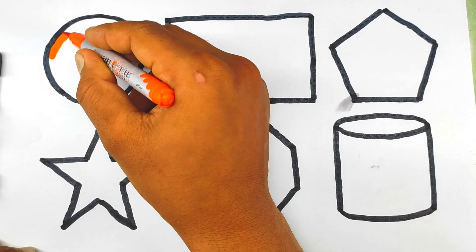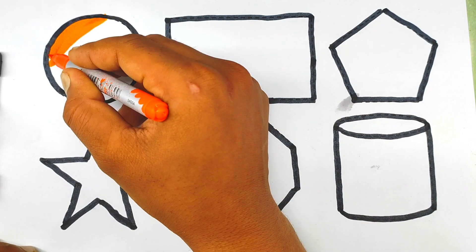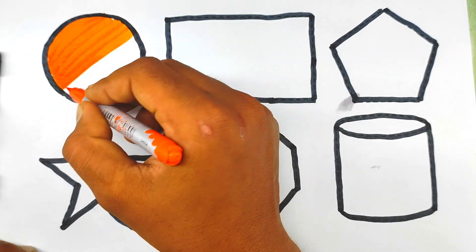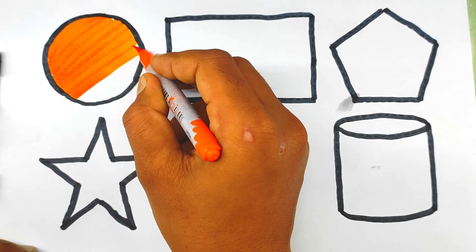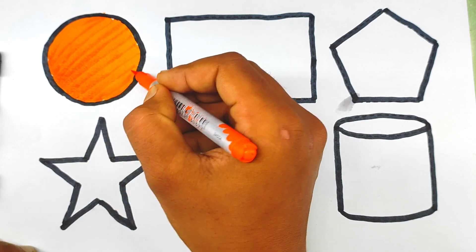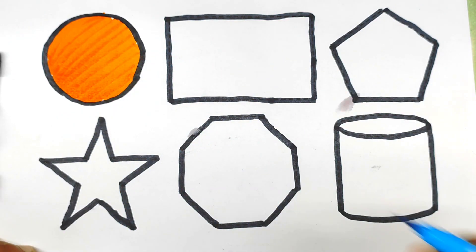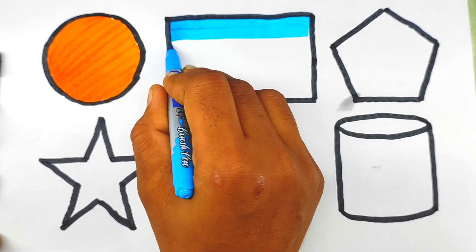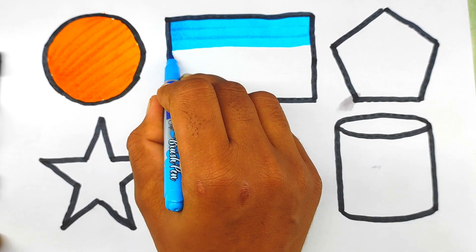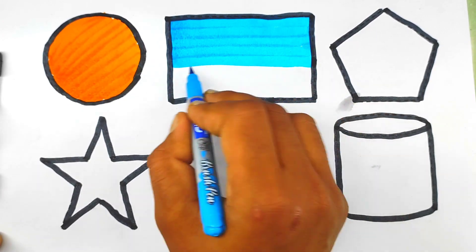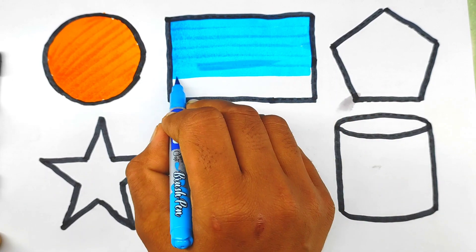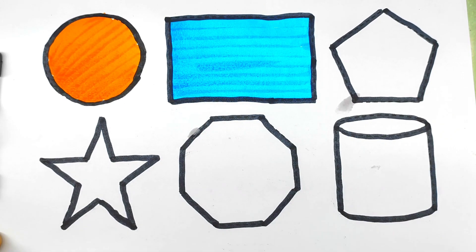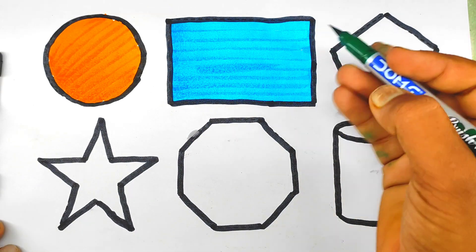Orange color — circle. Sky blue color — circle. Rectangle.